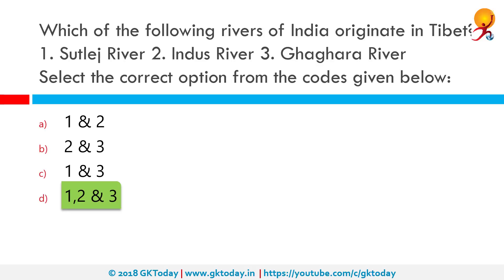The Satlej River, the longest of the five rivers flowing through the historic Punjab region in northern India and Pakistan, originates near Lake Rakshastal in Tibet near Mount Kailash. It flows generally west and southwest, entering India through the Shipki La Pass in Himachal Pradesh.